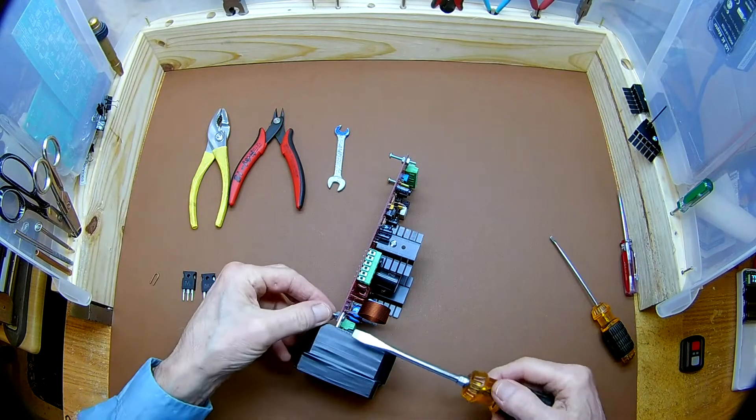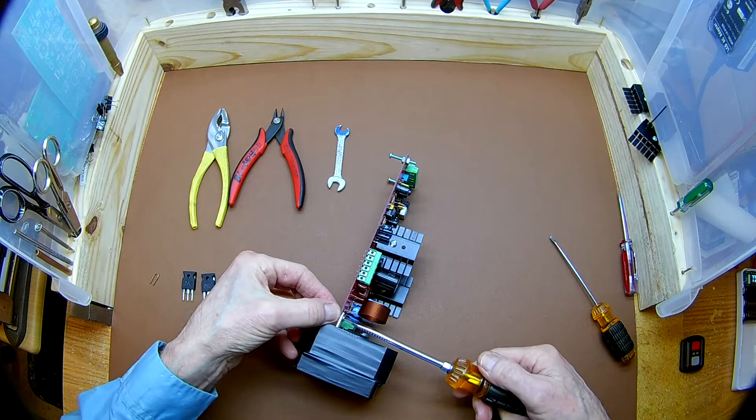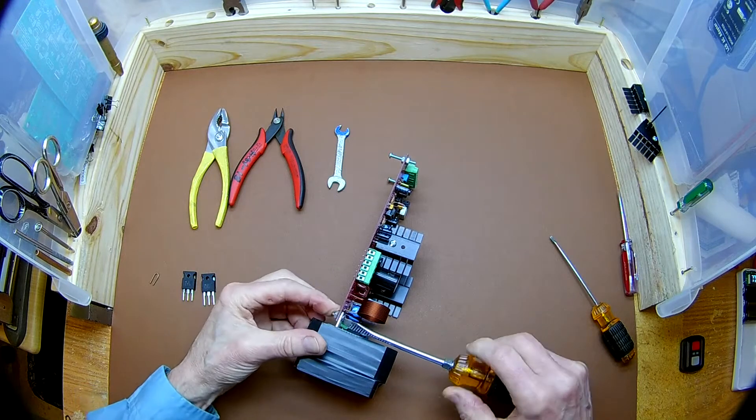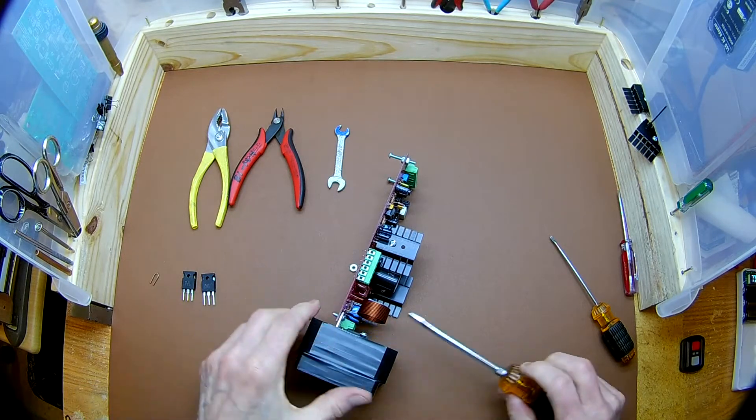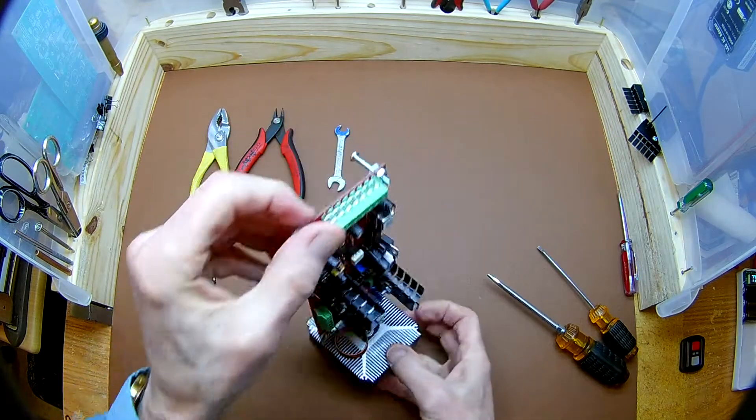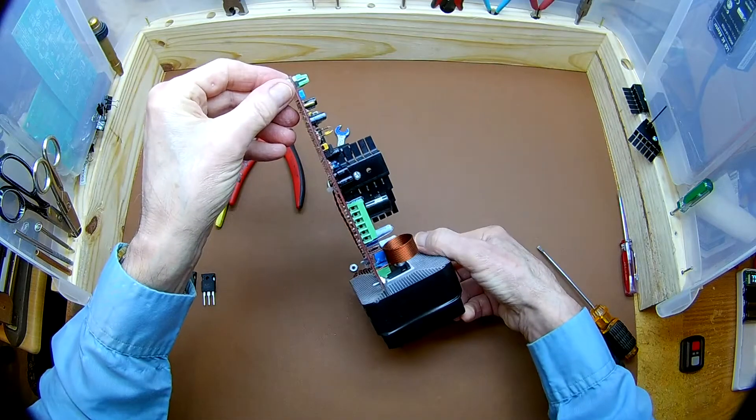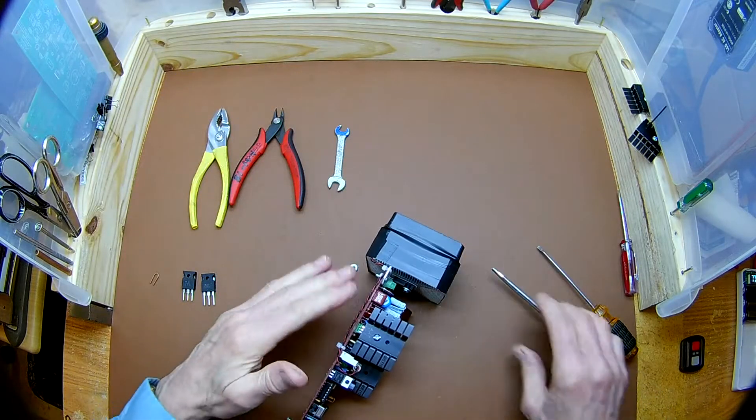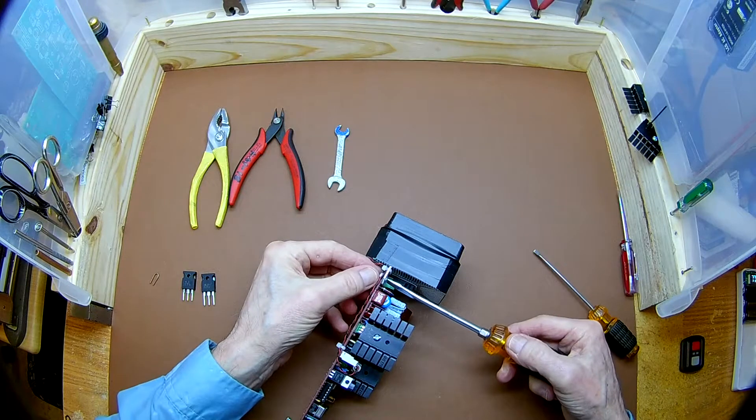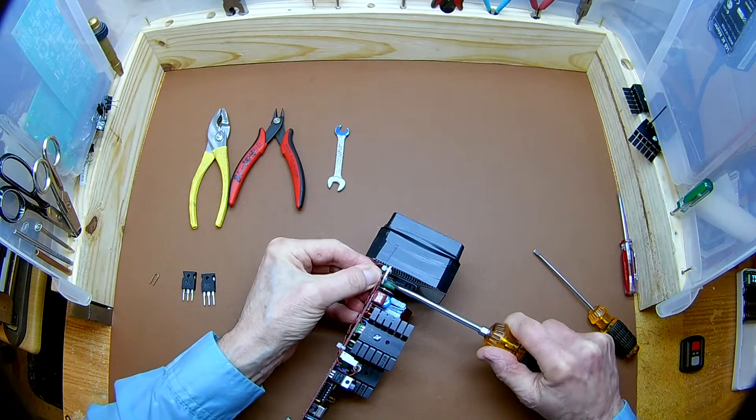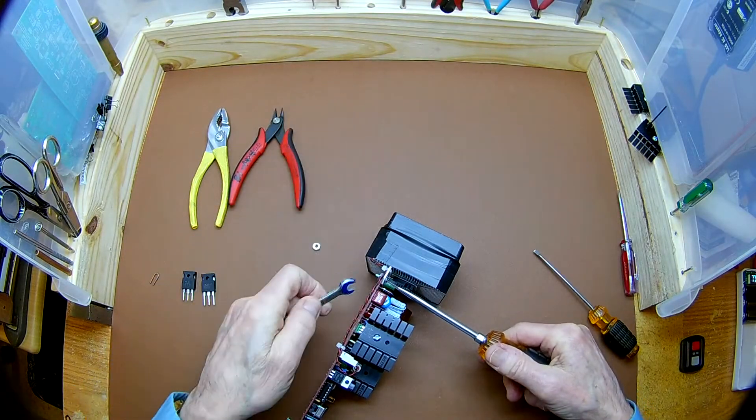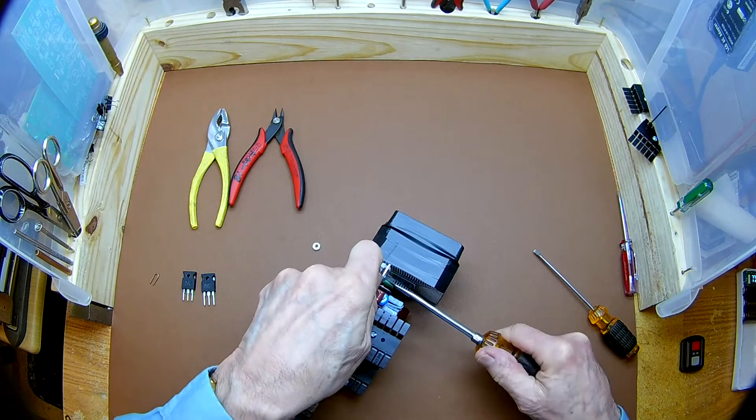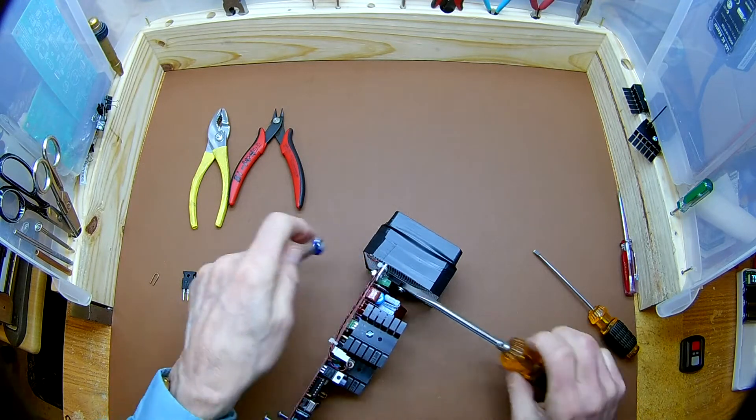Using a screwdriver and a pair of pliers if necessary, remove the nuts from the mounting bracket. Notice I didn't take the screw out yet; I'm using it to retain the board so it doesn't twist sideways. This one's a little tight, so I'm going to use a small wrench and hold it, and now I can get it free.